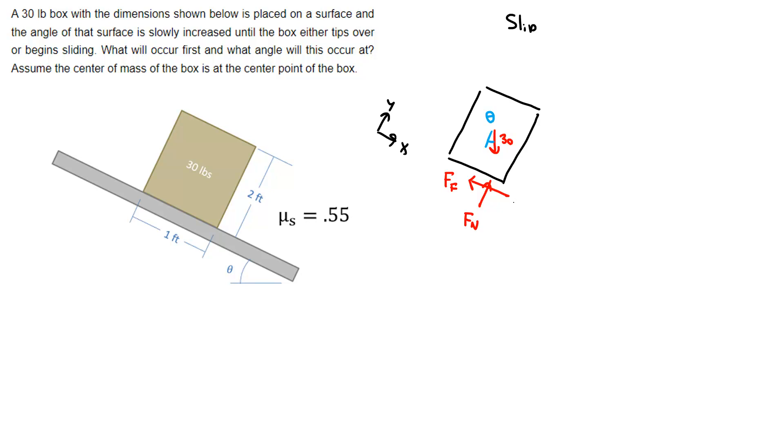So next let's put together equilibrium equations. I'm going to have sum of forces in the X: 30 times the sine of theta minus Ff equals zero. In the y-direction: Fn minus 30 cosine of theta equals zero.